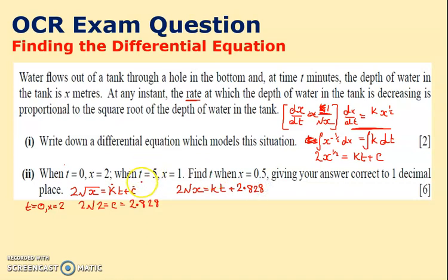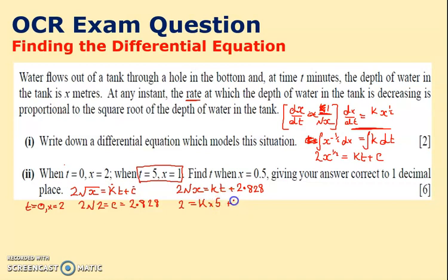Using the second condition, t equals 5 when x equals 1: 2 times √1 equals k times 5 plus 2.828, so 2 equals 5k plus 2.828. Therefore k equals (2 minus 2.828) divided by 5, giving k approximately negative 0.1657.